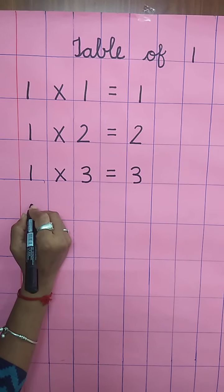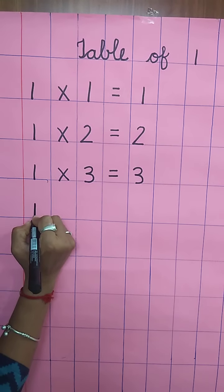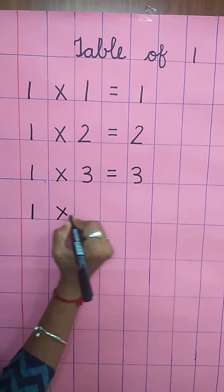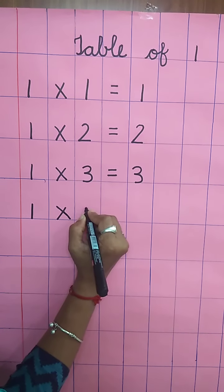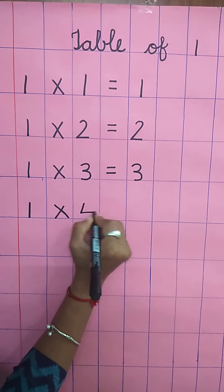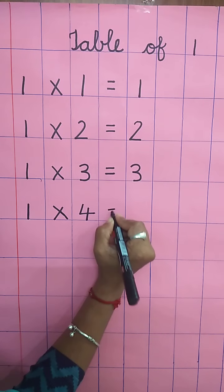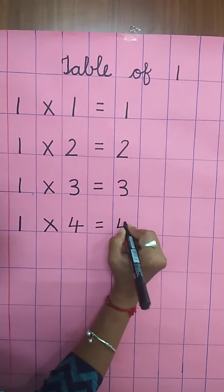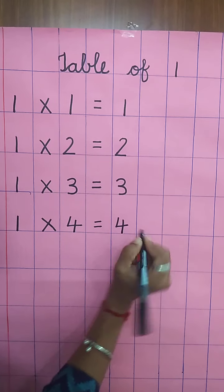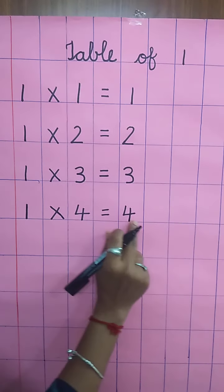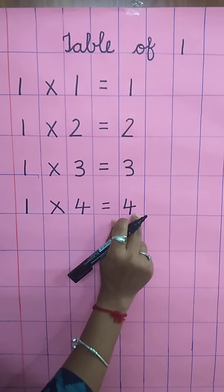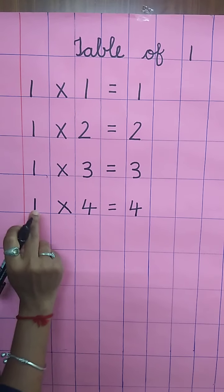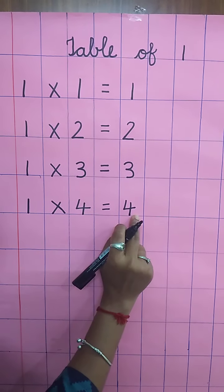You have to write. Again, write down one. Multiplying sign. Write down four. Equal sign. Write down four. One four's are four. Speak and write, children. Turn the line and write. One four's are four.